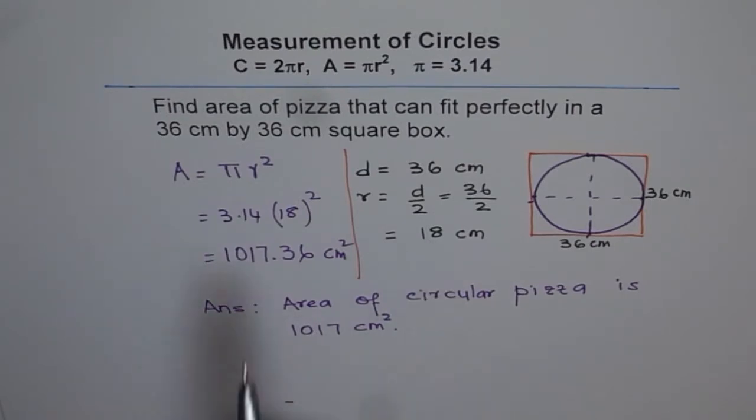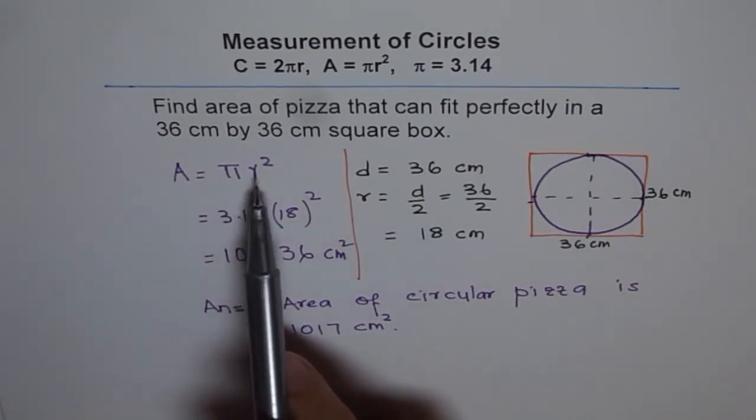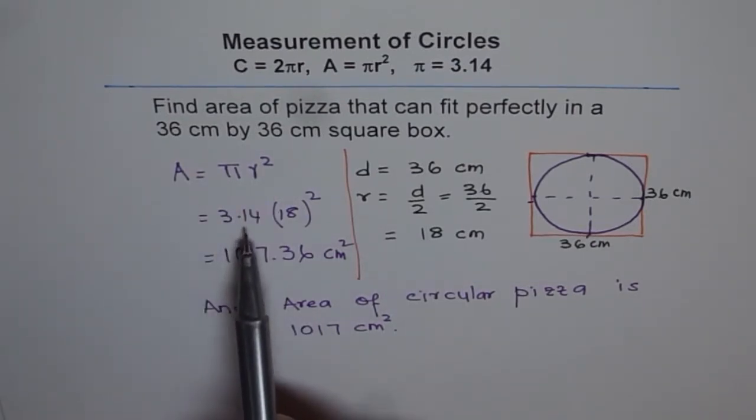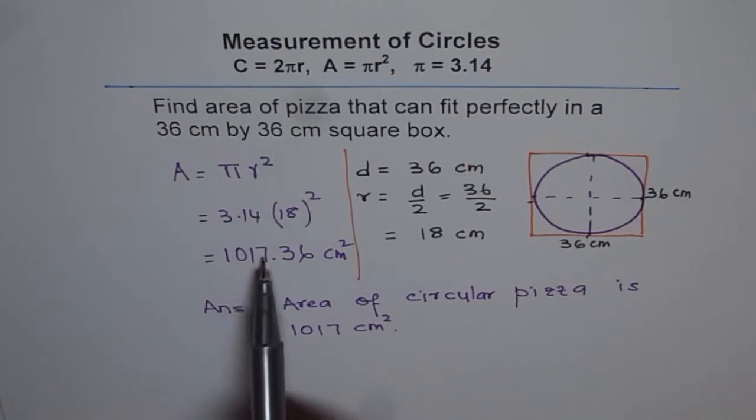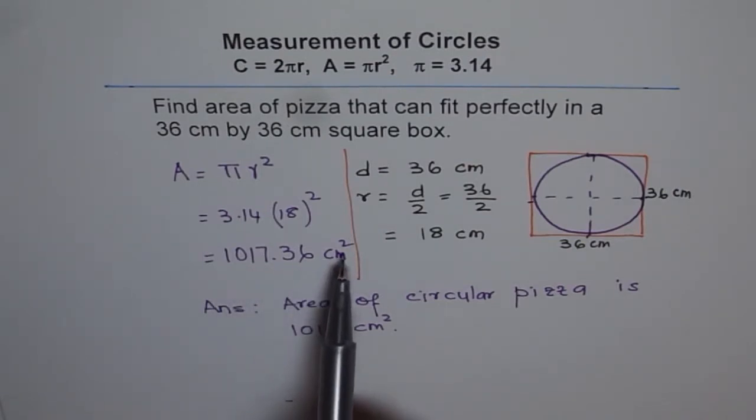To find the area, here we used the formula pi r square. Pi is 3.14. 3.14 times 18 square gave us 1017.36 cm square.